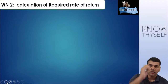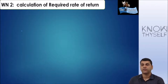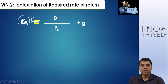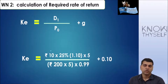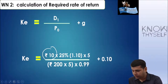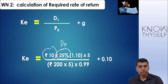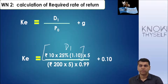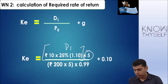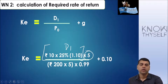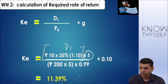Working Note 2: Calculation of required rate of return - we need KE. Since the company is issuing GDRs, the cost of equity is D1 divided by net issue price plus growth. Face value is 10 rupees, with 25% dividend today. D1 per share multiplied by the growth factor, then multiplied by 5 shares per GDR, divided by the market price of 5 × 200 = 1,000 rupees, adjusted for 1% issue expenses (× 0.99), plus growth gives KE = 11.39%.